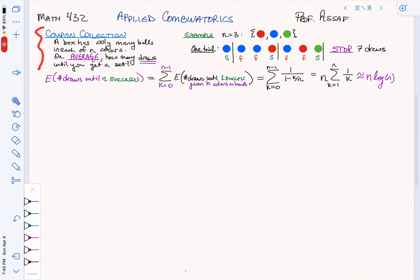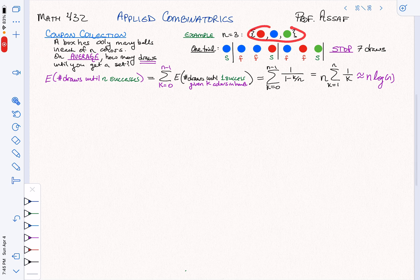Let's recap our study of the coupon collector's problem. The problem says we're given balls in some colors with infinitely many of each, and we make successive iterations of drawing the balls, stopping as soon as we get all three balls occurring.